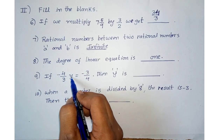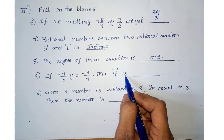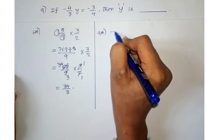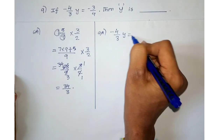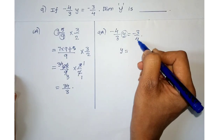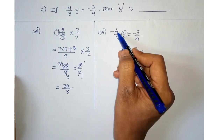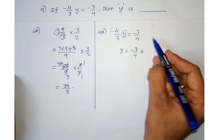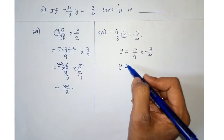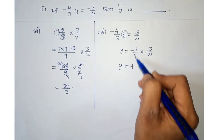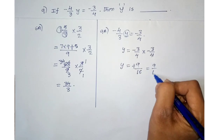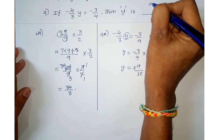Ninth one: if (−4/3) × y = −3/4, then y is? This is a linear equation, so we find the y value. To solve: y = (−3/4) ÷ (−4/3), which equals (−3/4) × (−3/4). Wait — dividing by −4/3 means multiplying by its reciprocal −3/4. So y = (−3/4) × (−3/4). Minus times minus is plus: 3 × 3 = 9, and 4 × 4 = 16. So the answer is 9/16.